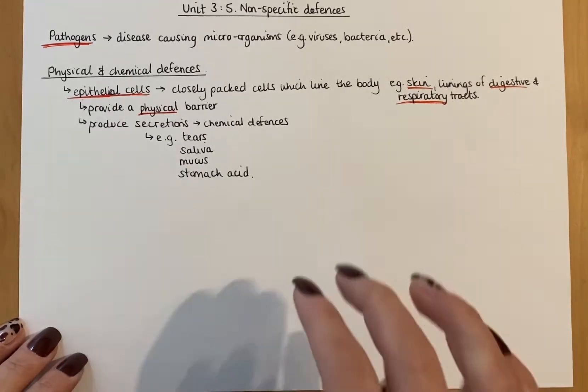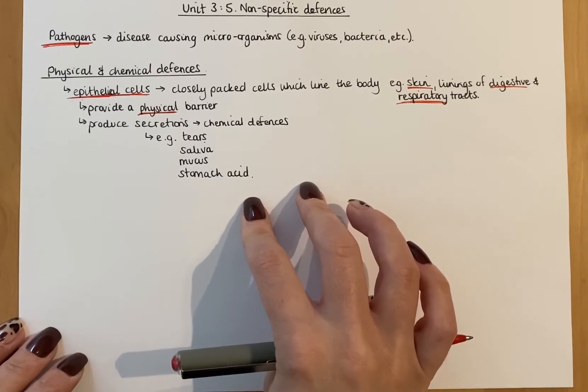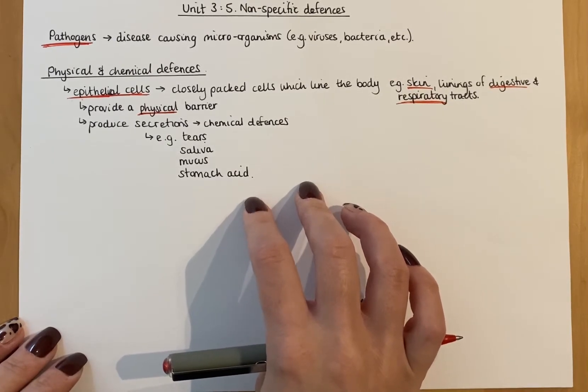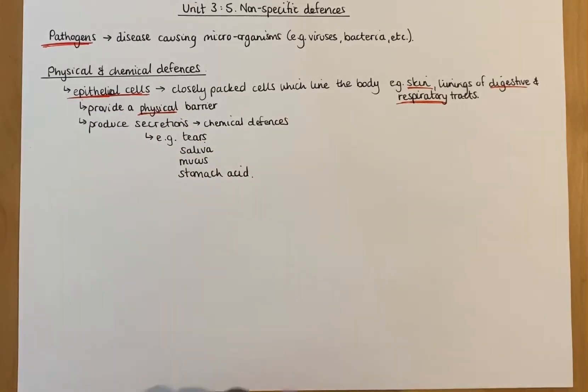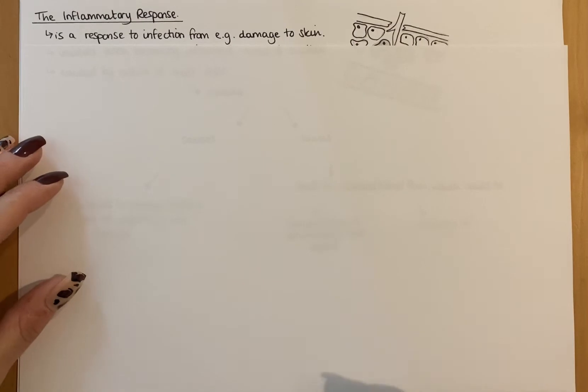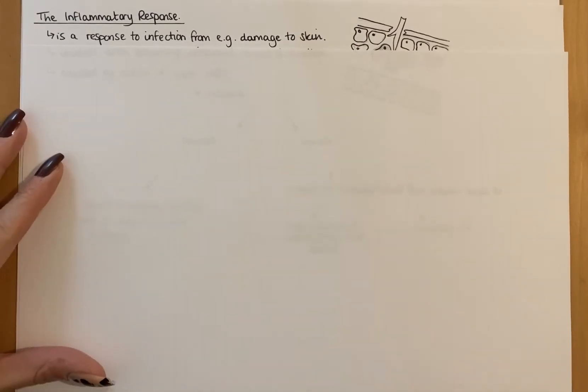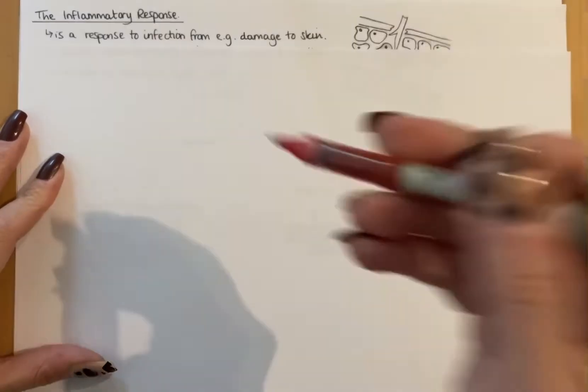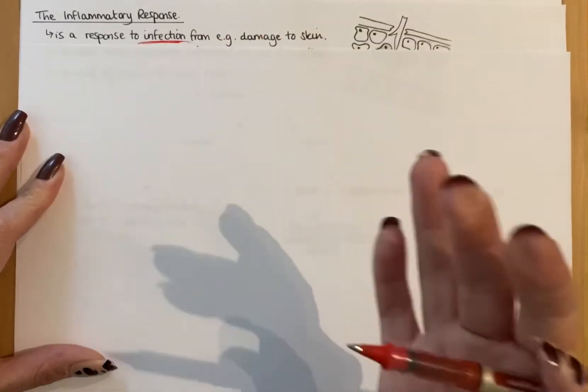This is your first line of defense, but the main part of non-specific defense is what happens when that physical barrier of epithelial cells is broken. That's when we start to talk about what's called the inflammatory response. Your inflammatory response is essentially a response to something damaging the skin - to infection, to a pathogen entering your tissues. It's a response to infection and it's normally damage to the skin.